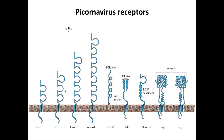Let's start with the first step in infection - attachment and entry. The receptors for many picornaviruses have been identified. Among the first to be identified were the receptor for poliovirus, PVR, and the receptor for a certain group of rhinoviruses, ICAM-1. Some picornavirus receptors are immunoglobulin-like molecules containing the immunoglobulin domain. But there are other kinds of cell surface molecules that also serve as receptors, including GPI-linked proteins such as CD55, and dimers such as the integrins. Basically a wide variety of cell proteins are receptors for different picornaviruses.